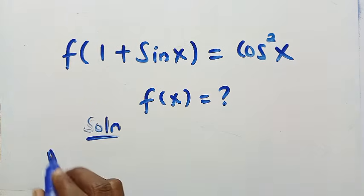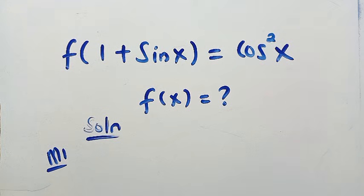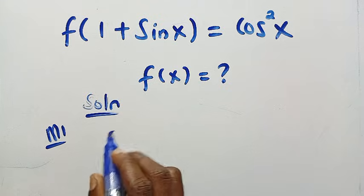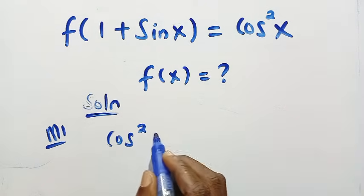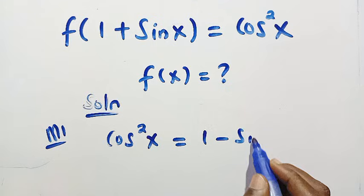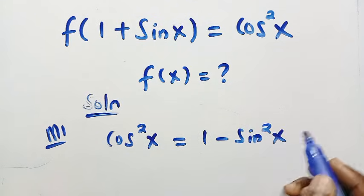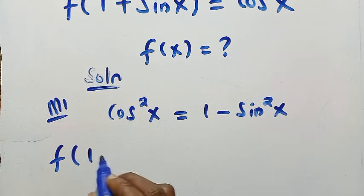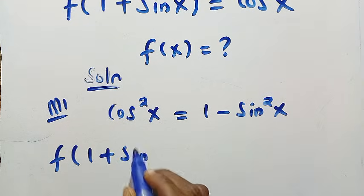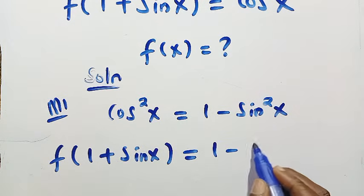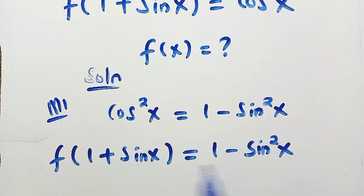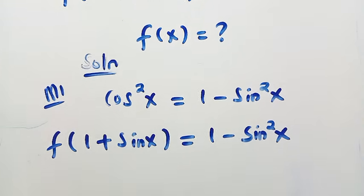So we consider solution, here is method 1. Let's start by converting cos²x into sin x. We note that cos²x is given as 1 minus sin²x. By substituting this, we have f(1 + sin x) equals 1 minus sin²x. I have to convert this because the domain here is in sin x.